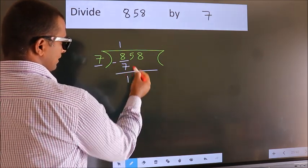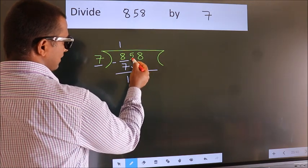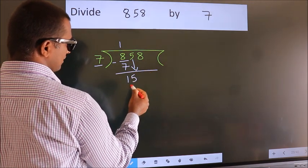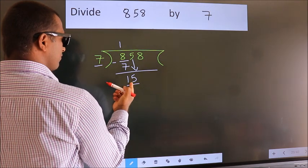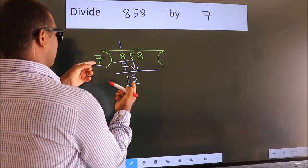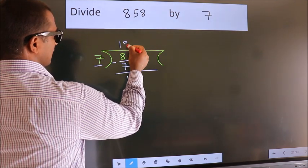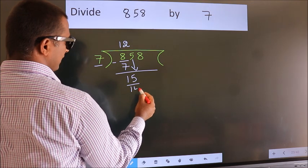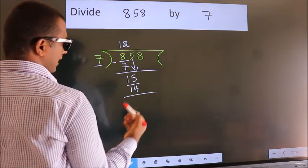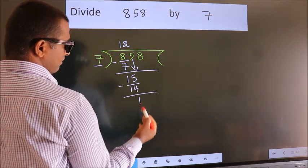After this, bring down the beside number. So 5 down. So 15. A number close to 15 in the 7 table is 7 twos 14. Now we subtract. We get 1.